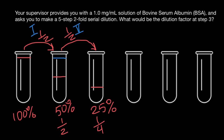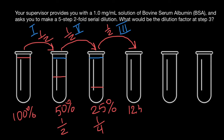And now step number three. Again, we dilute by one half, so we dilute this volume. And by the way, we also add water here to restore the volume. So now our concentration is going to be, again, one half — and this is step number three. We are going to have only one half of 25%, which is going to be 12.5% concentration. We can say this is going to be one eighth.